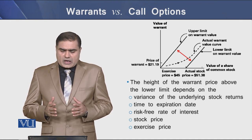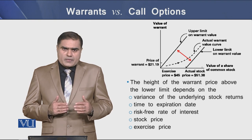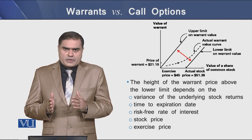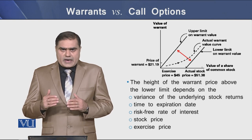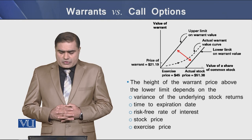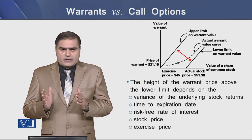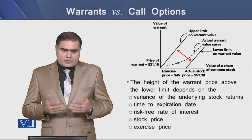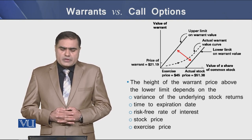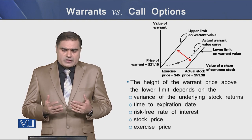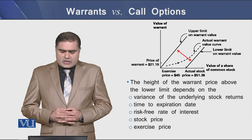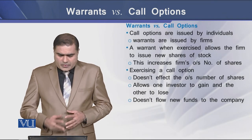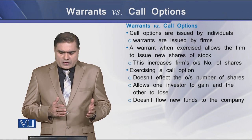On the screen we can see a diagram showing the upper and lower value of warrants through a pair of two vertically upward sloping lines. The value of a warrant lies between these two lines. A red dotted line runs from below upward within these two parallel lines. The degree to which the warrant price exceeds the lower limit depends on: variance of the underlying stock returns, time to expiration date, risk-free rate of interest, stock price, and the exercise price.